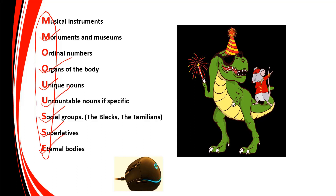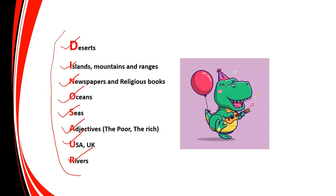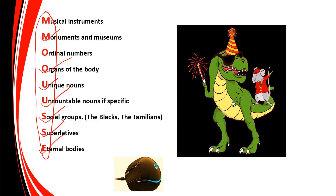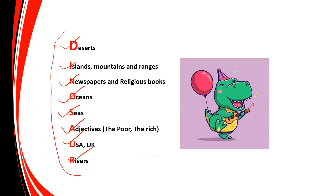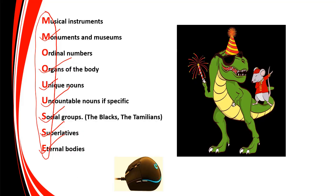And before eternal bodies — the Earth, the Mars. So if you remember these two words, DINOSAUR and MOUSE, automatically all the rules for when to use the definite article 'the' will be in your memory, and these two acronyms will help you answer MCQs in your examination. In the next session, you will be learning when to omit articles. Thank you students, thank you very much.